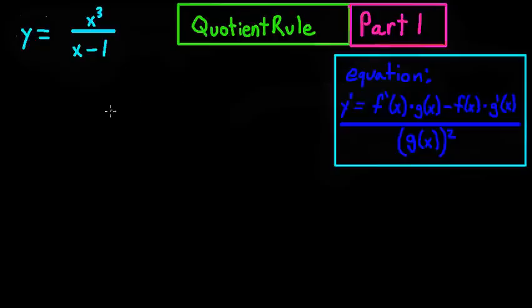So the first thing you're going to do is set up a table. You're going to draw an f, and that's just going to be this little top part up here, so x to the third. Next, you're going to get the derivative of f, or f prime, and that's going to be 3 times x.